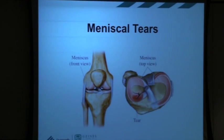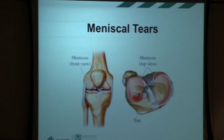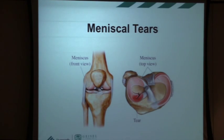We'll start off with meniscal tears. This is a view of your knee — the bones in your right knee looking from the front. Here's your kneecap, your patella, the fibula, the tibia, and the femur. If we cut this in half and look down from above, we can see these two structures that live on either side of your knee, and this here is the tear of the meniscus.